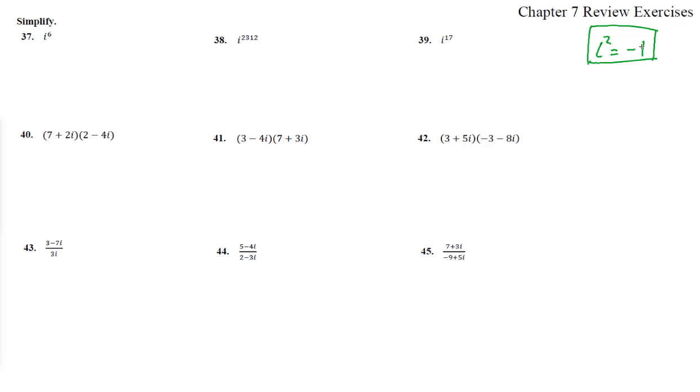Every time we see an i squared, it's negative 1. Notice here, i to the 6th is i squared cubed. i squared is negative 1, and negative 1 cubed is simply negative 1.